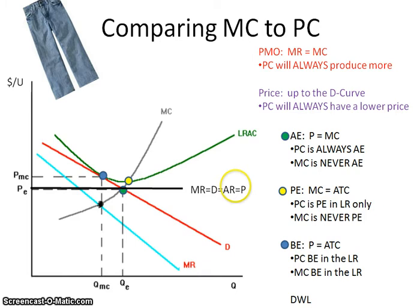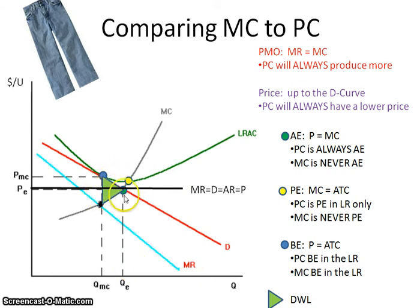We can't have a discussion comparing things to perfectly competitive without talking about deadweight loss. Deadweight loss is that loss of consumer and producer surplus. You can see that with that lower quantity, you're losing consumer and producer surplus when shifting from the allocatively efficient amount of the perfectly competitive to the lesser amount of the monopolistically competitive.